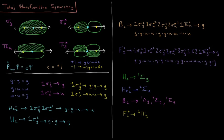For F₂⁺, the configuration is 1σg² 1σu*² 2σg² 2σu*² 3σg² 1πu⁴ 1πg*³. Working through the g/u products: the filled shells contribute pairs of u's and g's, and the 1πg*³ contributes g×g×g. Counting all contributions, there are 8 u's (even) and 9 g's. Since there are an even number of u's, the total result is g, giving a final term symbol of doublet pi g for F₂⁺.